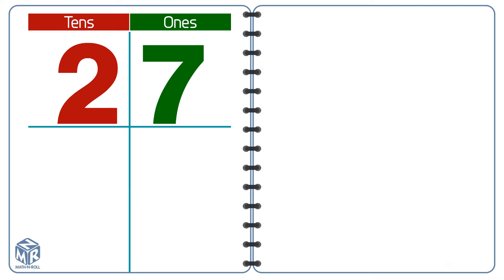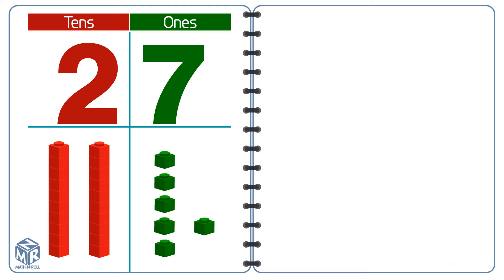A two-digit number has one number in the 10s place and another number in the 1s place. The 2 in 27 means two 10s, or 20. The 7 in 27 means seven 1s. We can write two 10s and seven 1s as 27.